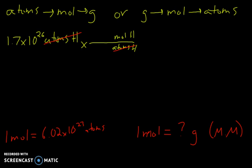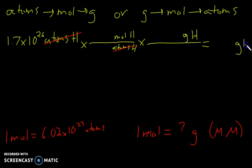Normally we'd stop here, work it out, get an answer, and then maybe convert to grams. But we're going to do it in one whole step instead of two separate equations. Now that we've got moles, we can go from moles to grams. We put grams on the top since that's our final answer, and moles goes in the bottom so it cancels. Our moles on top cancels moles on the bottom, and we're left with just grams as our unit.